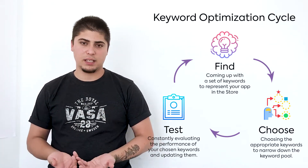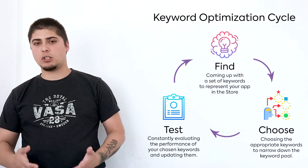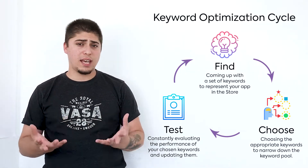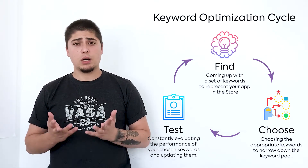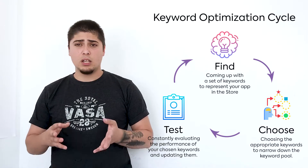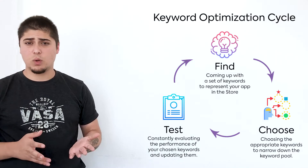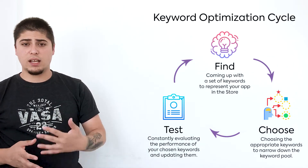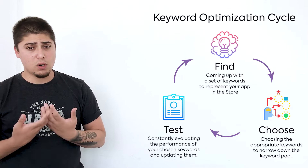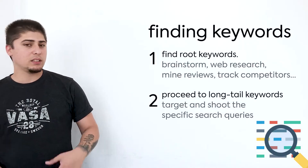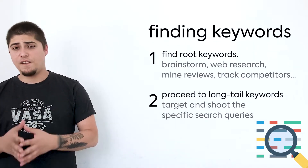Never get discouraged when you have an initial keyword list. Maybe you choose 10 or 20 keywords but only three or four of them ranked. In this case, it's not healthy to say that keyword optimization doesn't work. Instead, you have to revisit and find what went wrong, and then decide on the correct keywords.